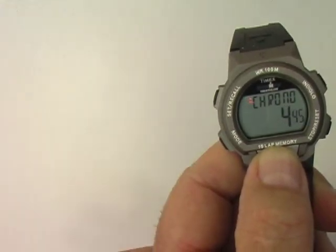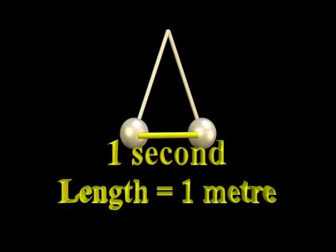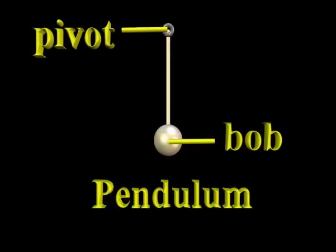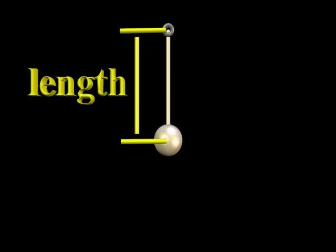As I mentioned earlier, the mass of the bob isn't important. The amplitude of the swing is also not a significant factor as long as it does not exceed 15 degrees. The length of the pendulum determines the period. Length is the distance from the pivot to the center of gravity of the bob. In the case of a spherical bob, the center of gravity is the center of the sphere.